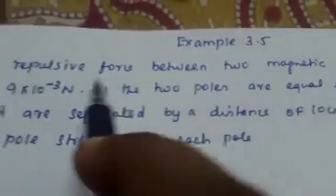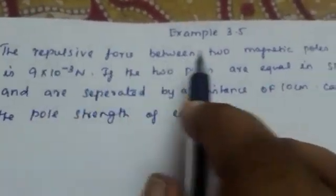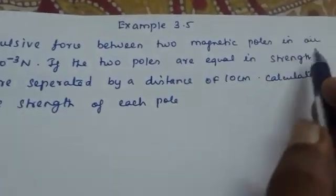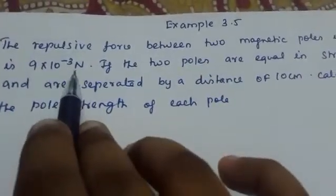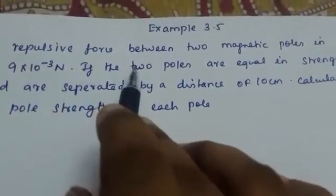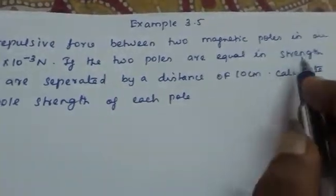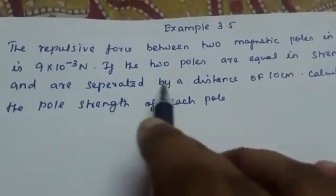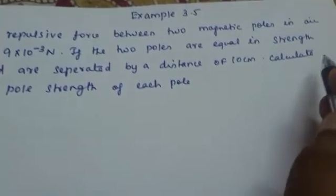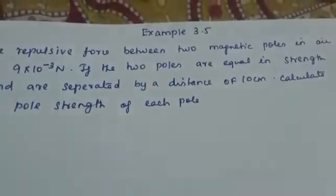Example 3.5. The repulsive force between two magnetic poles in air is 9 × 10^-3 Newton. If the two poles are equal in strength and are separated by a distance of 10 centimeter, calculate the pole strength of each pole.